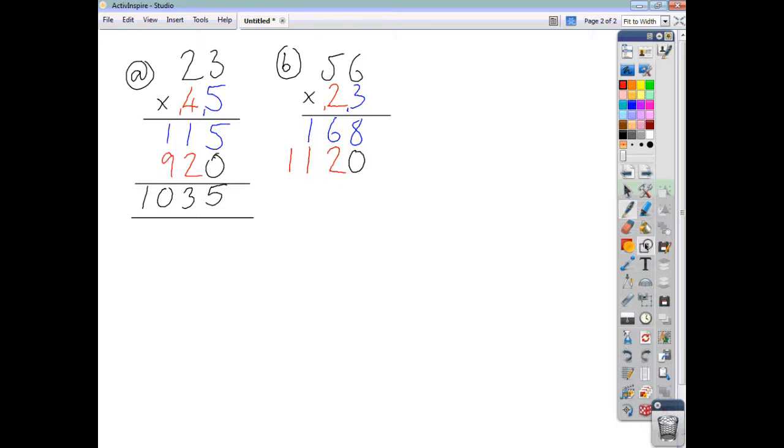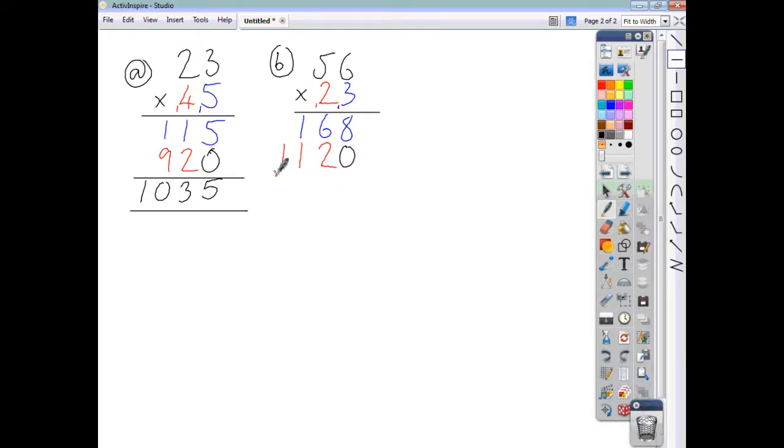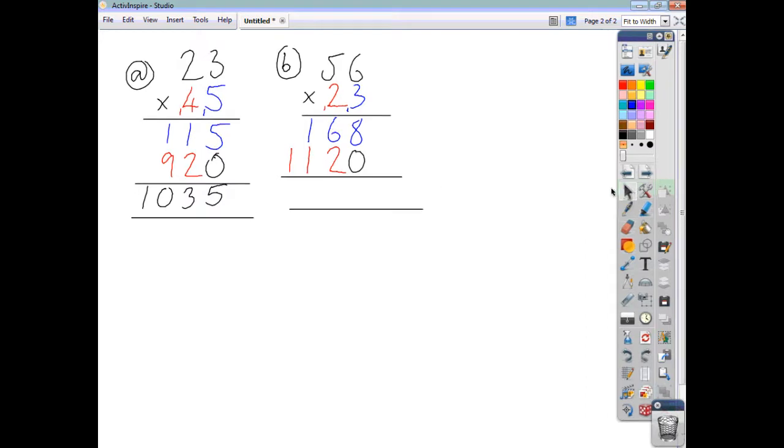Now we're ready to add our 2 lines of working up together to get our final answer. 8 add 0 is 8, 6 add 2, 8, 1 add 1 is 2, 1 and nothing is 1. So that's your final answer for that question. Let's do one more.